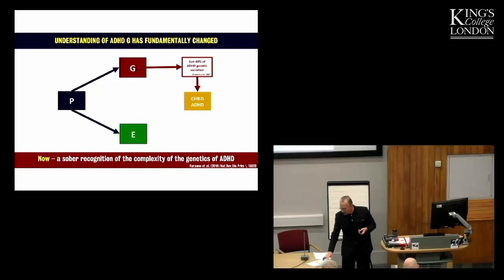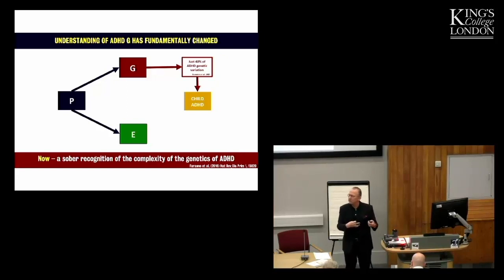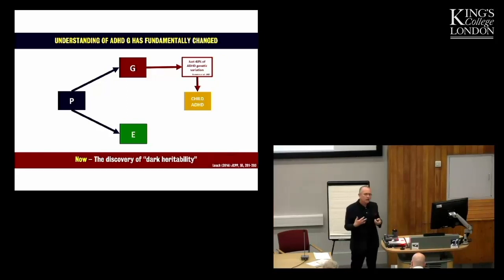However, when you look at even the nominally significant markers, many of these are going to be false positives, you only account for about 40% of the genetic estimate from the twin studies. So clearly there's a very large proportion of genetic effect that we can't identify in terms of specific measured genes. And this has been called missing or dark heritability, and that's a major challenge in ADHD genetics, as in other areas of psychiatric genetics.